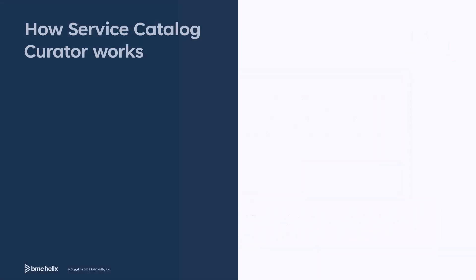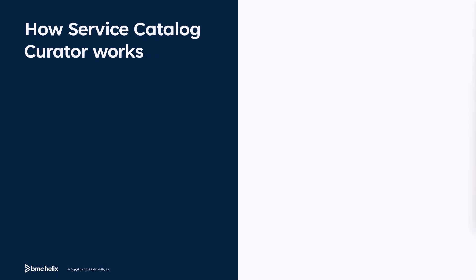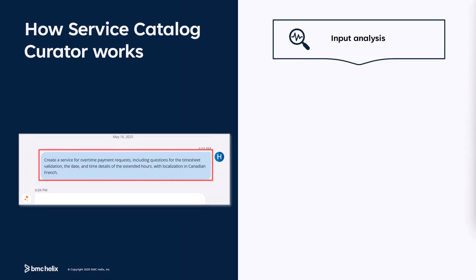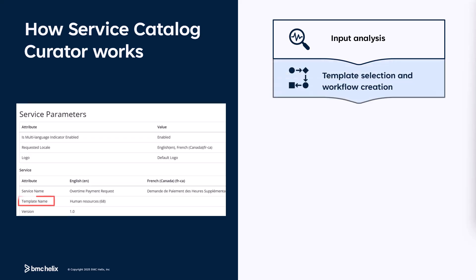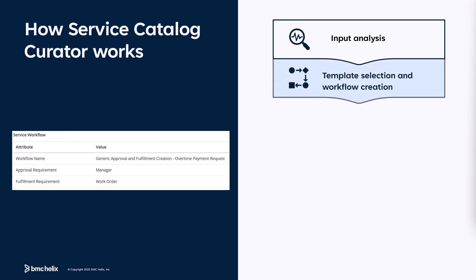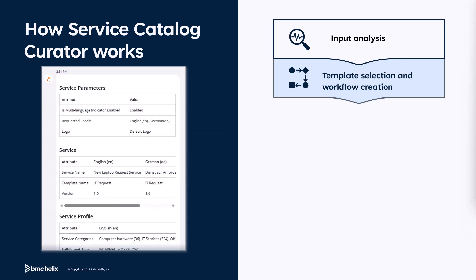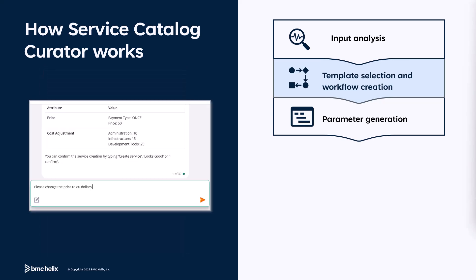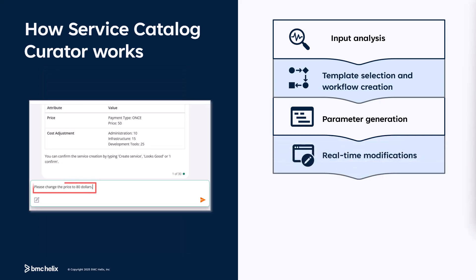When you enter the prompt, the Service Catalog Curator gets to work. It begins by analyzing your input, then moves on to selecting a template and creating a workflow that fits your needs. Next, it automatically generates service parameters and organizes them in a structured table. You can make real-time modifications if needed, keeping things flexible.